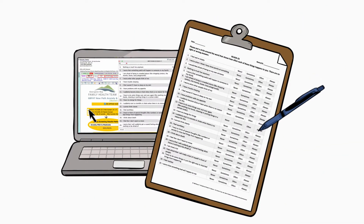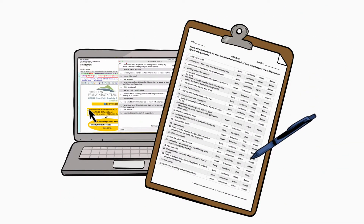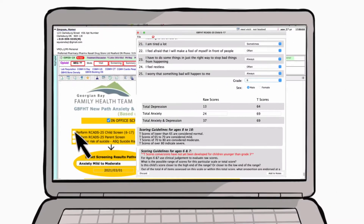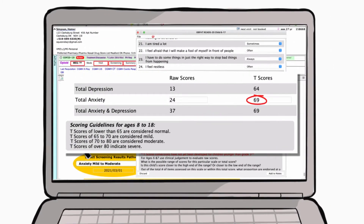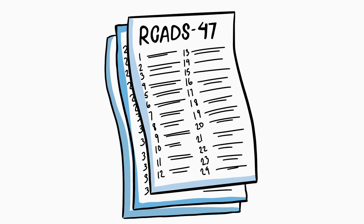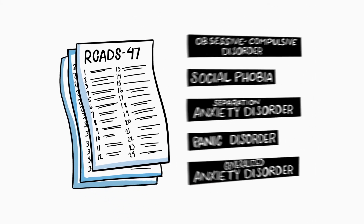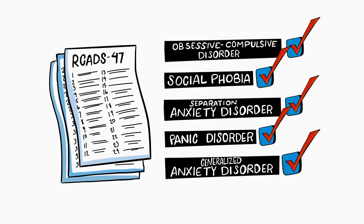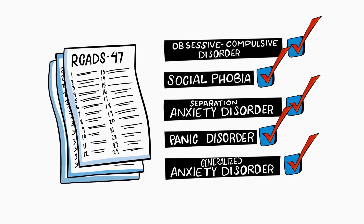Once all questions are answered, the responses are summed to an overall anxiety score and an overall depression score. If you use the long version, you can also compute separate scores for five more specific anxiety disorders.